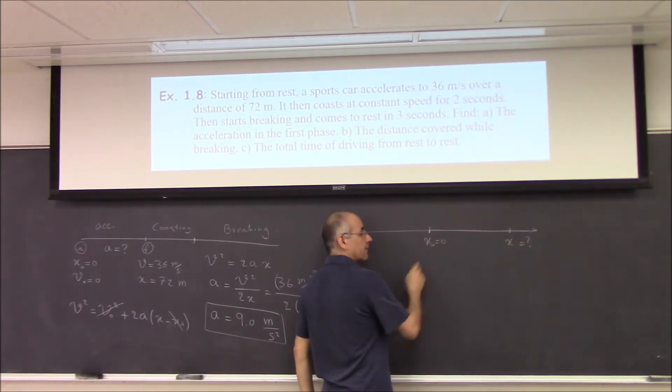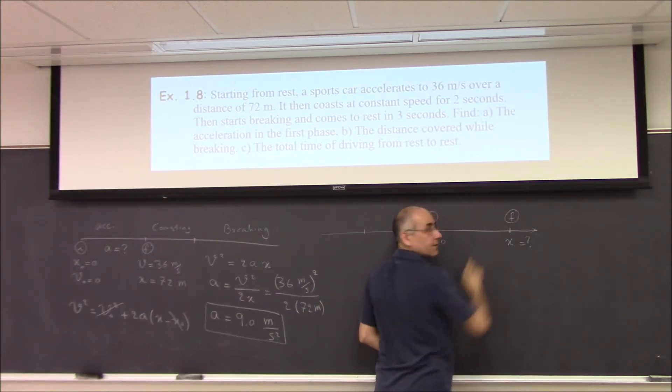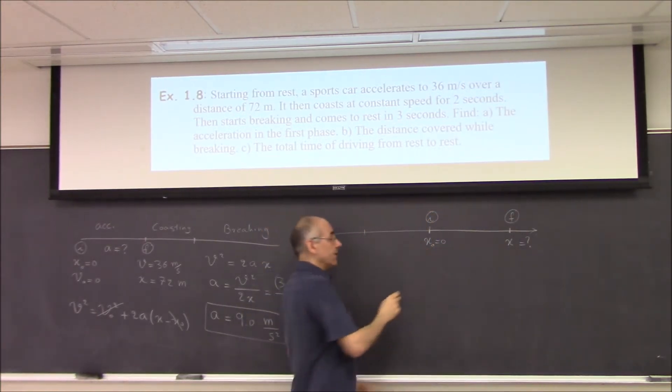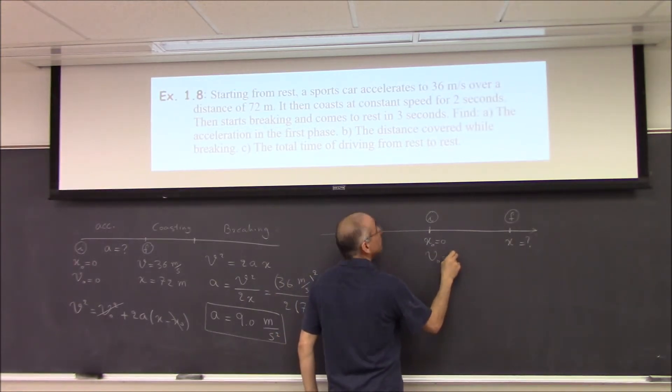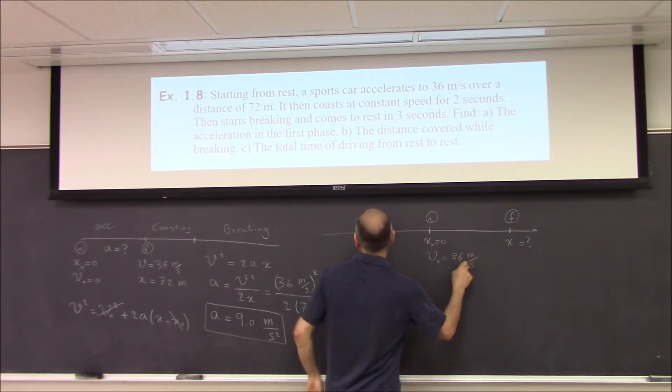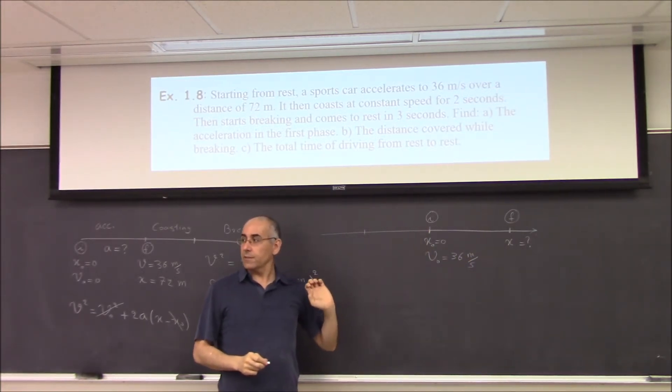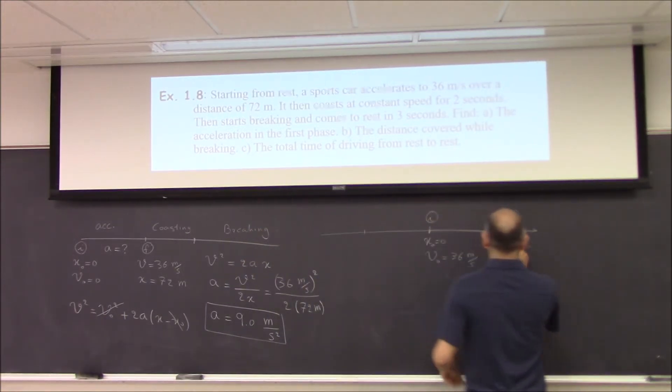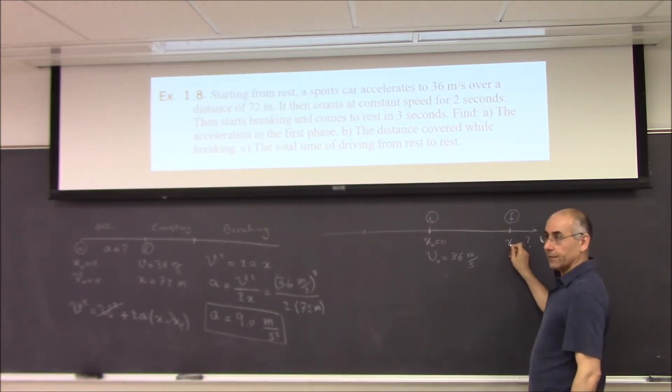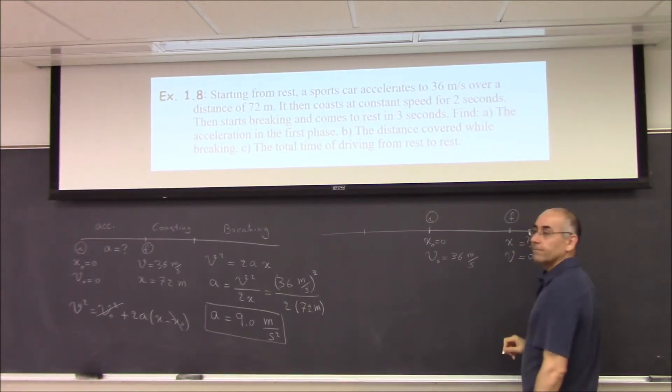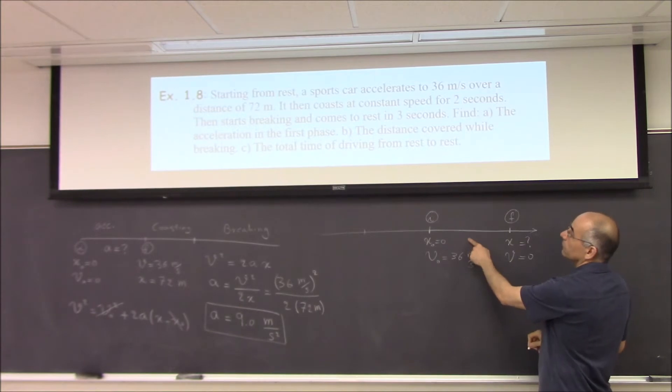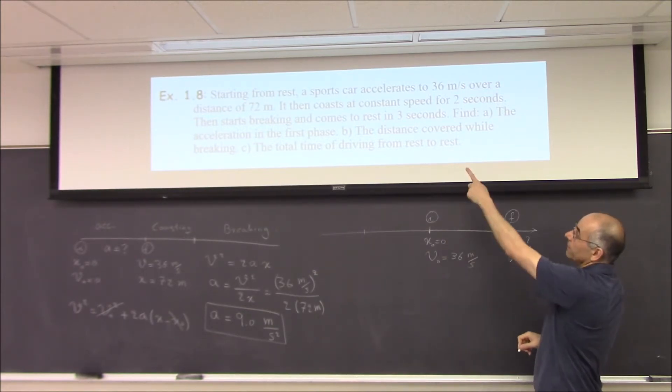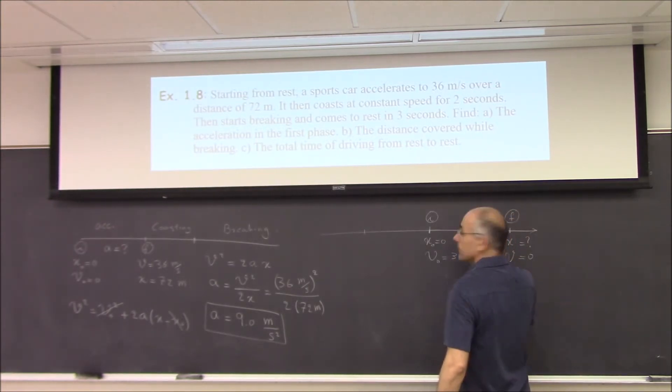36, but that is what, in our notation, if this is our initial situation, this is final situation, right? But this is initial velocity, then the initial is 36 meters per second. Because it is coasting from here to here, the velocity is 36, right? And then, what is the velocity here? It stops here, right? So, v is equal to 0 here. And what is, do, what do we know about here? Do we know the time or acceleration? We have time. It says, braking and comes to rest in 3 seconds. So, t equal to 3 seconds. Right?